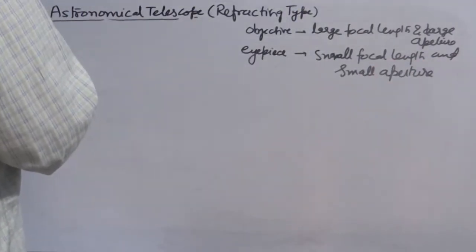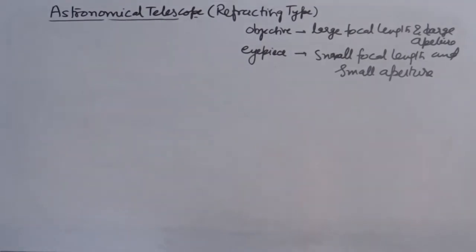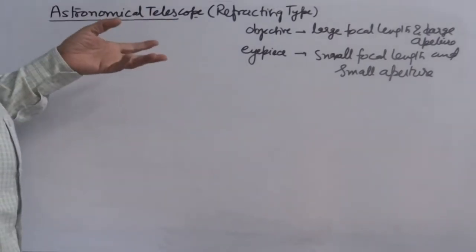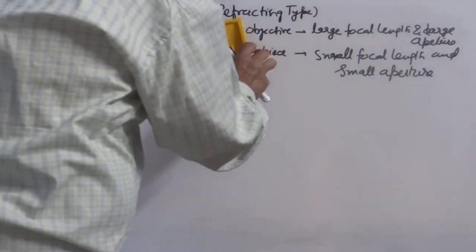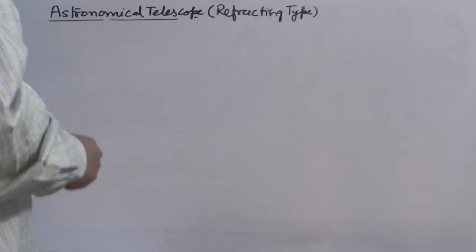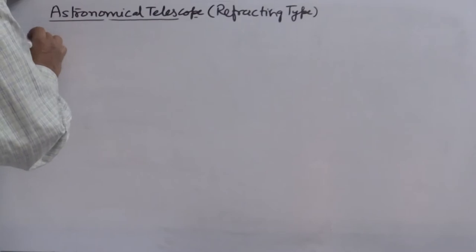There is a difference compared to the microscope. In case of the microscope, the objective is of small focal length and small aperture, and the eyepiece is of moderate focal length and large aperture. But here in the telescope, the eyepiece is of small focal length and small aperture. Telescopes are used to observe far-off objects. There are two ways to use an astronomical telescope; number one is normal adjustment.